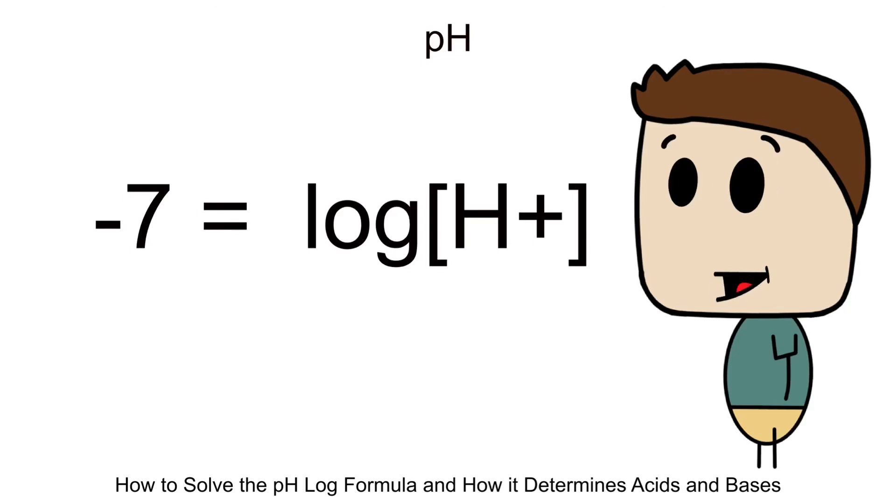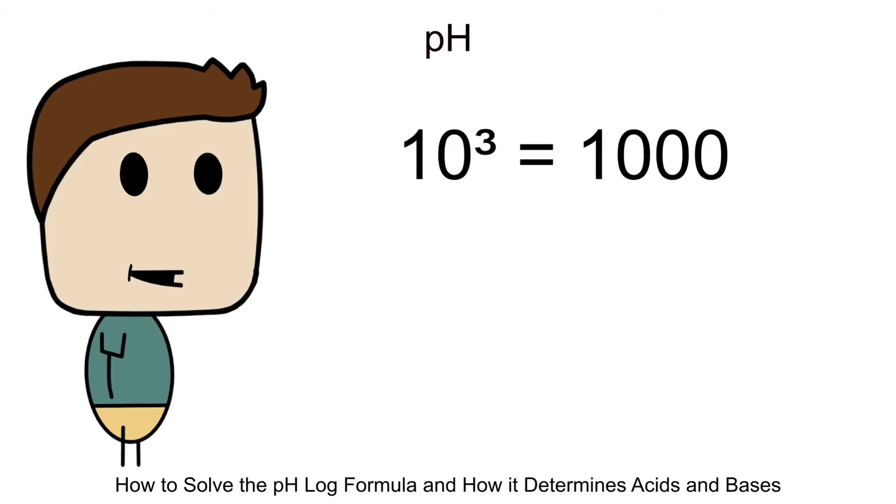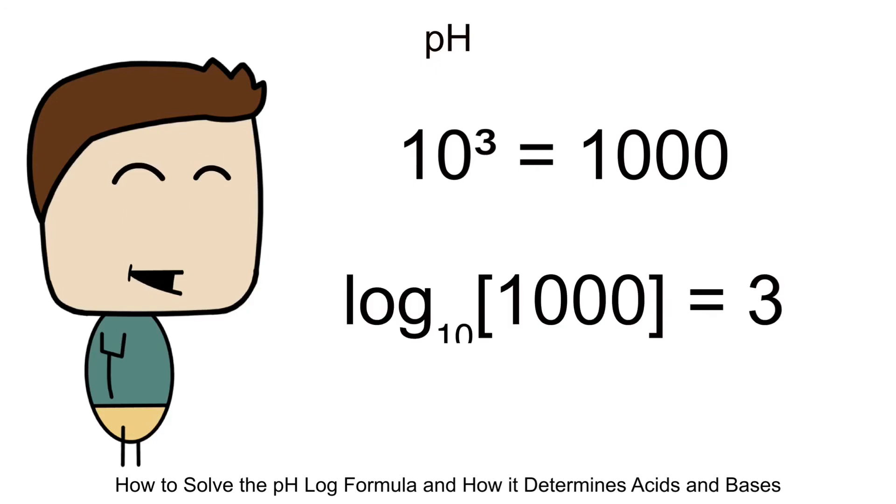Remember when I said that logs are simply just a rearrangement of exponential expressions? Let me give you a few conversion examples from exponential expressions to log expressions and vice versa. Let's say 10 to the power of 3 would equal 1000. But what you'll be surprised to see is that we can rearrange the numbers into a logarithmic form. Log of base 10 of 1000 actually equals 3. Punch the first half of the equation into your calculator and you'll see that this is absolutely true. The answer is 3.